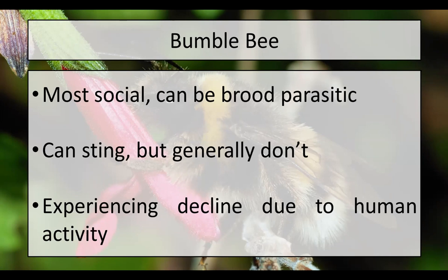One thing I want to point out with our bumblebee is that we are seeing a decline due to human activity. They are sensitive to what we do because we fragment our habitat and use pesticides around sensitive areas where they're going to be present. Part of what I'm hoping you get out of this program tonight is new ways to try to help protect them and give them safe places where they can exist.